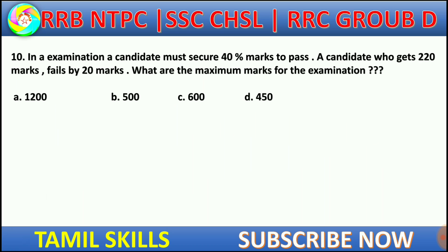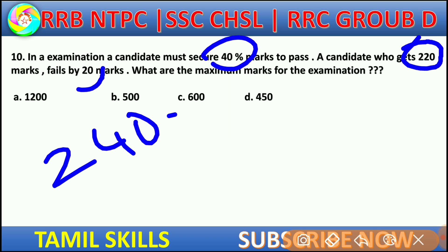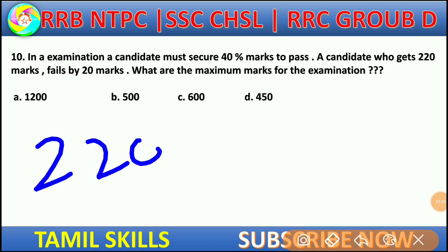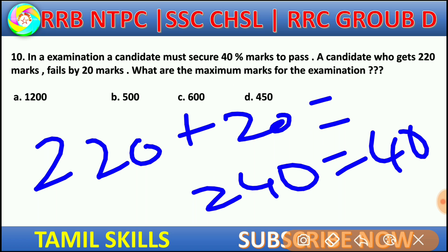In an examination, a candidate must secure 40% marks to pass. A candidate who gets 220 marks fails by 20 marks. So 220 plus 20 equals 240, which is 40% of total marks. Therefore, 240 divided by 40 multiplied by 100 gives total marks of 600.